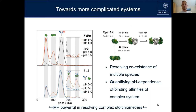What we observe first of all, when you do the purity check, is that FcRn is present as both monomer and dimer, and already this equilibrium is highly pH dependent, whereas the IgG is not affected by pH. We mixed these two compounds together in a 1-to-2 ratio with a slight excess of FcRn, and measured at different pHs from 5 to 6.